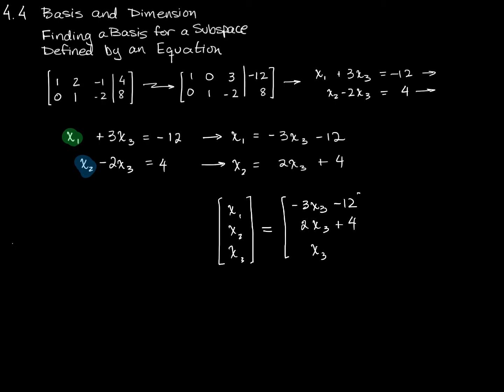And x3 is just x3. Using vector addition, I could write this as negative 3, 2, and 1 times the unknown constant number x3 plus the constant vector negative 12, 4, 0. And x3 is what we called a free variable. It's free to roam all around the real numbers, and whatever value we pick for x3 will determine also then the values that we get for x1 and x2. So there are multiple solutions to this system of equations.